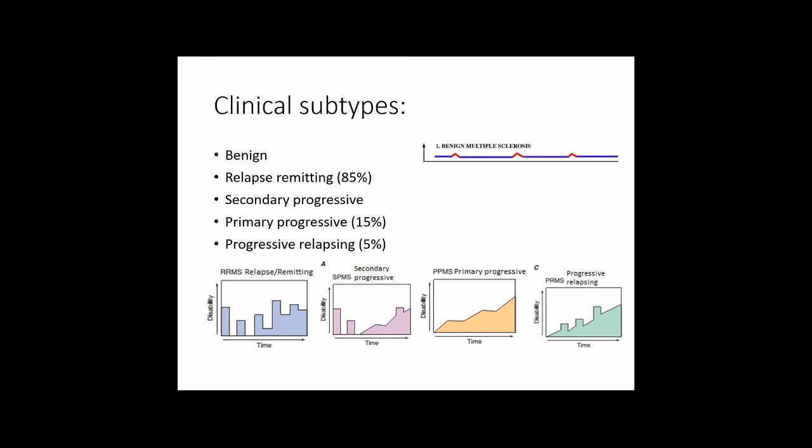The most common form is relapse-remitting MS, characterized by unpredictable attacks evolving over days to weeks — for example, sudden onset muscle weakness worsening over a week before improving. Between discrete attacks there tends to be complete recovery without further symptoms. Some patients with relapse-remitting MS may develop secondary progressive MS.